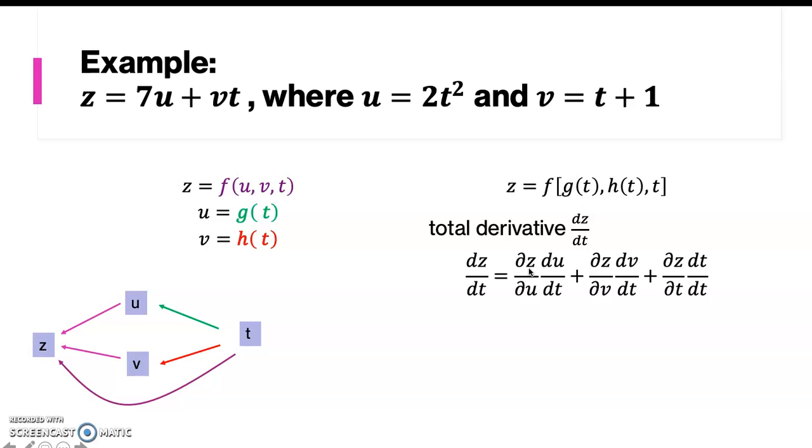We try to find ∂z/∂u. From here, ∂z/∂u is just 7, and then du/dt is 4t, plus ∂z/∂v is just t, dv/dt is 1, and dv/dt is just equal to 1.